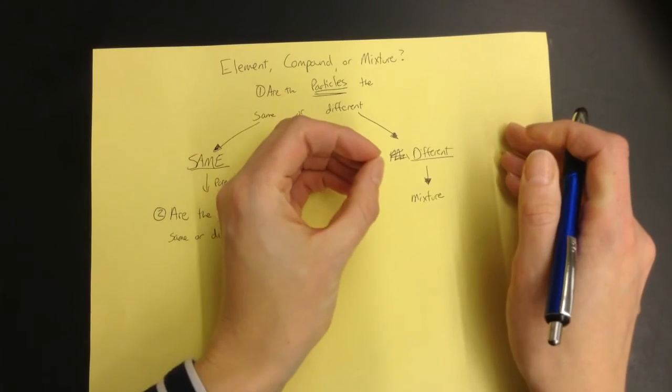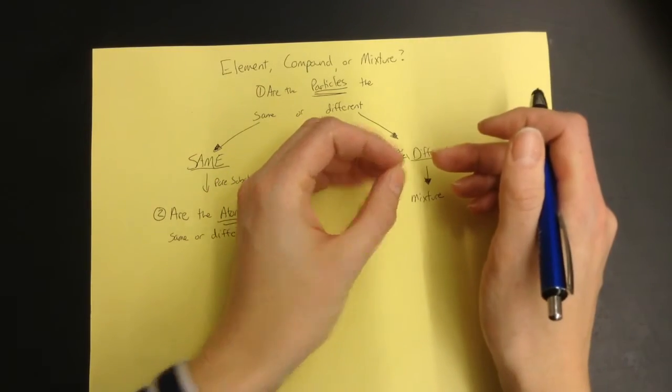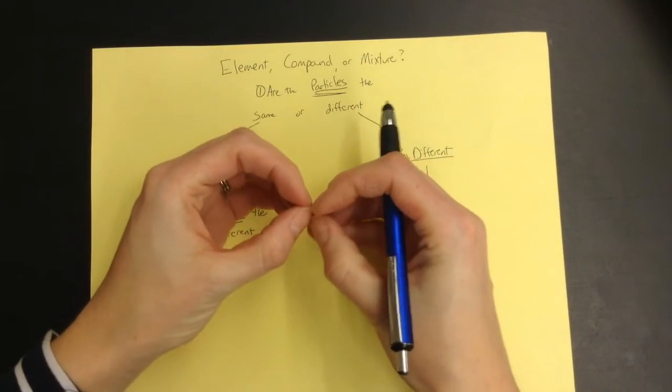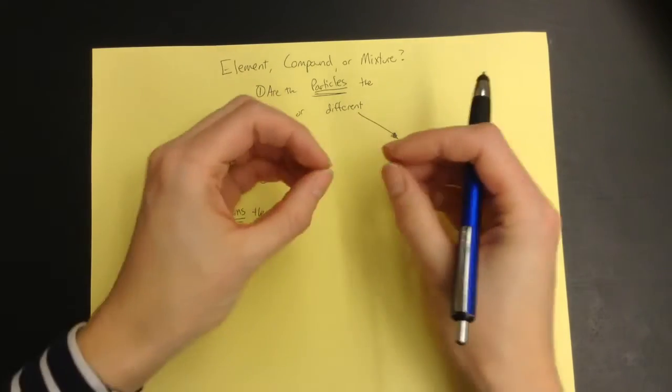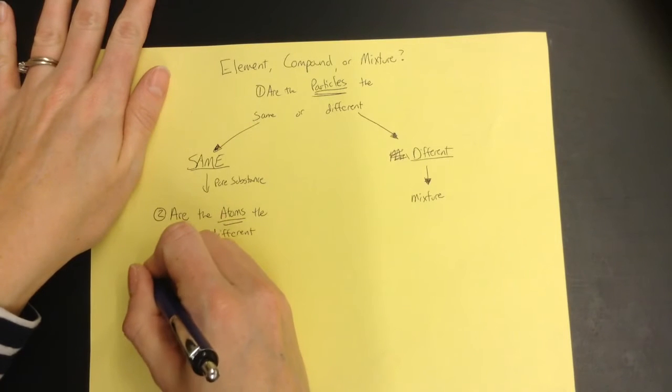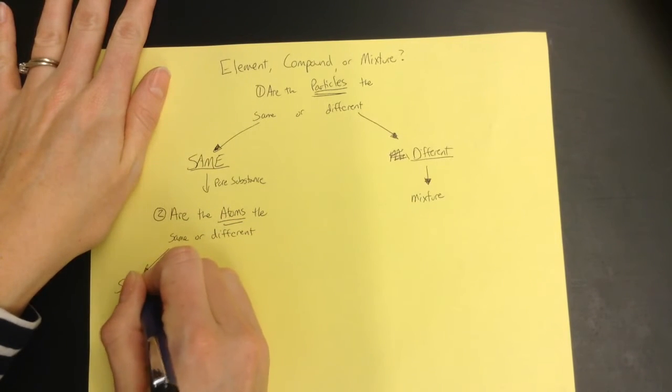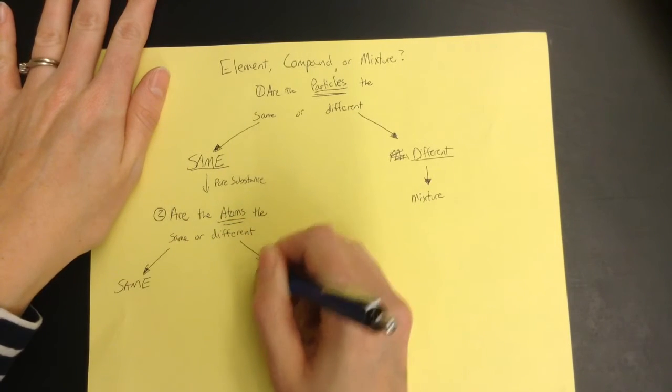So maybe they're single atoms and they're all the same, in that case you'd pick same. Maybe they're atoms that are stuck together, if they're the same atoms stuck together, then that's the same. If they're different atoms stuck together, then you would pick different. So over here we'll put same, and over here we'll put different.